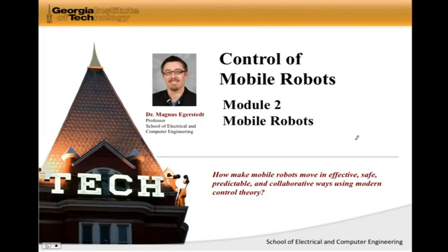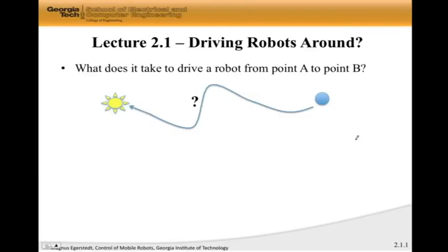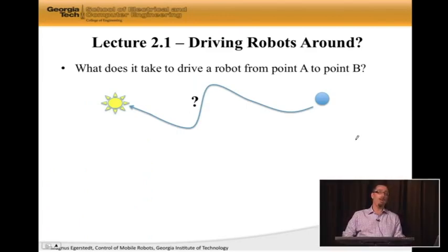And what we're going to do is start with a very simple question. How do I drive a robot from point A to point B, or in this case, from a blue ball to a yellow sun?